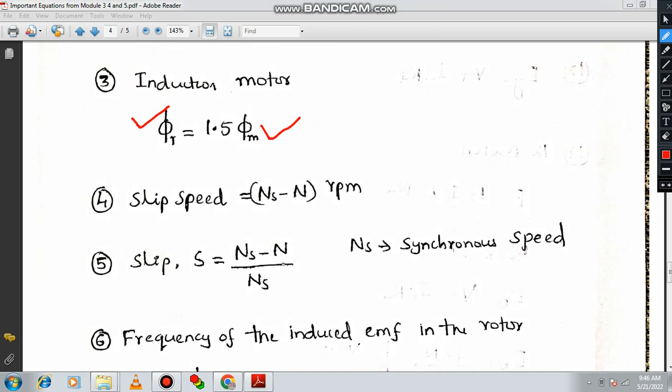What is slip speed? Slip speed is nothing but the difference between the synchronous speed and the speed of the rotor. ns minus n. That is also expressed in terms of RPM only. Difference in the speed. Synchronous speed and rotor speed. Then, one of the very important terminology called slip. Slip is nothing but ns minus n divided by ns. If you want, you can express in terms of percentage by multiplying with 100. ns minus n divided by ns, where ns is known as synchronous speed. Do remember this. n is the speed of rotor.